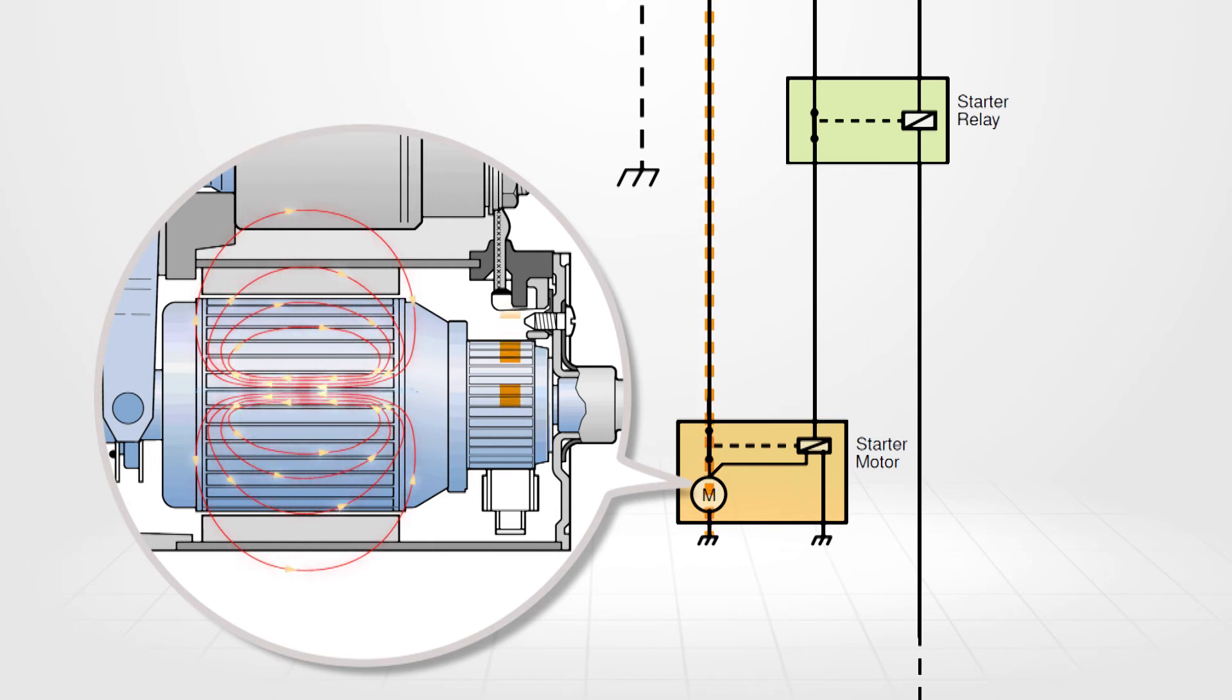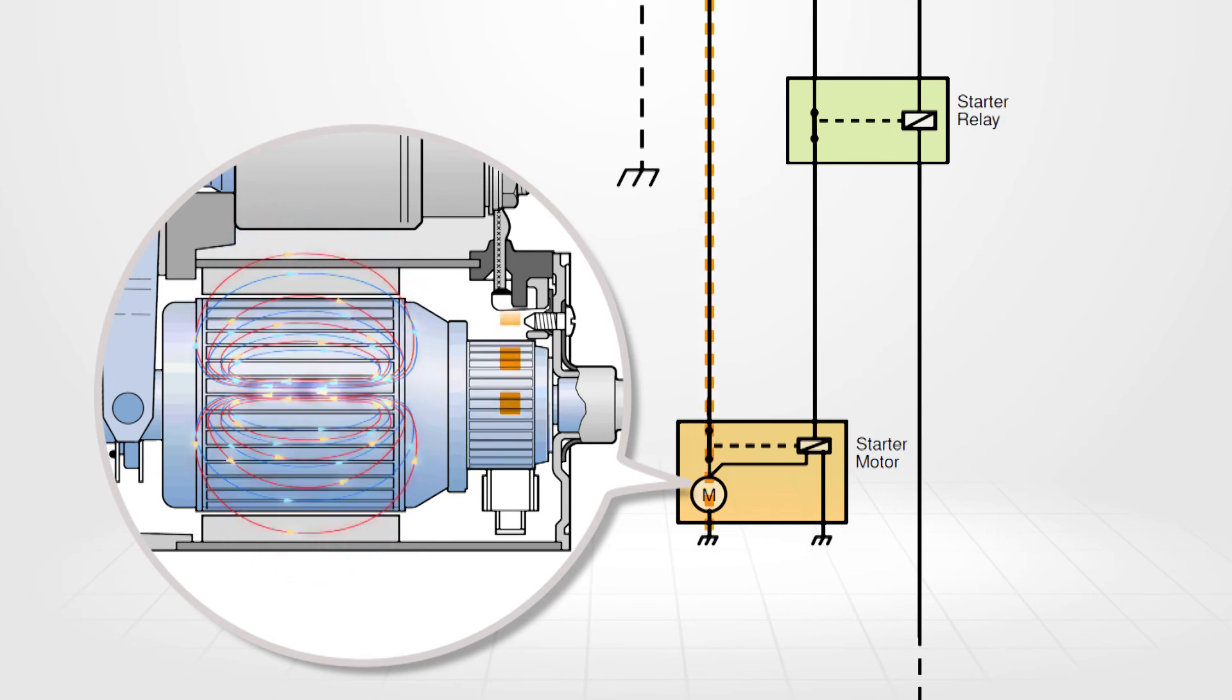This magnetic field reacts to an opposite field from the pole shoes or permanent magnets causing the shaft to rotate.